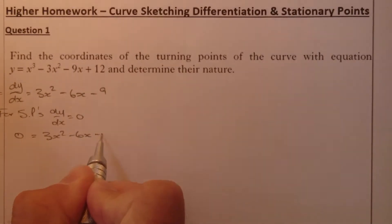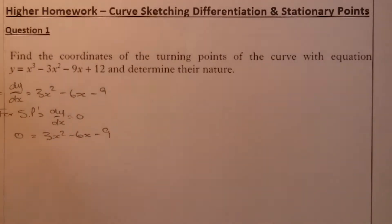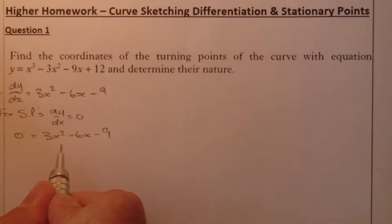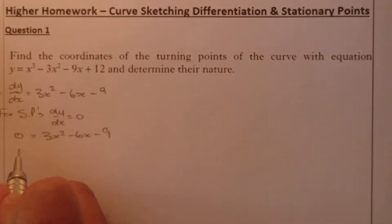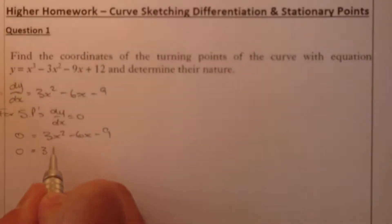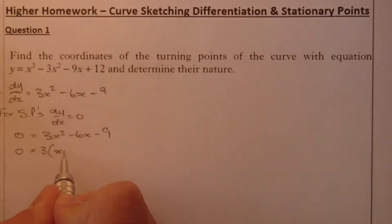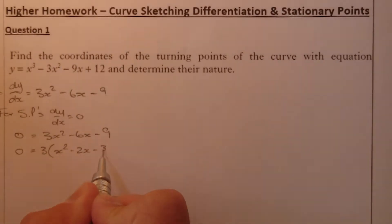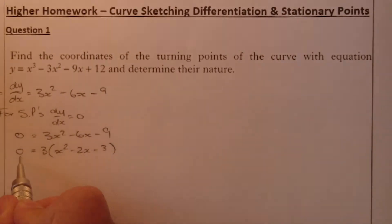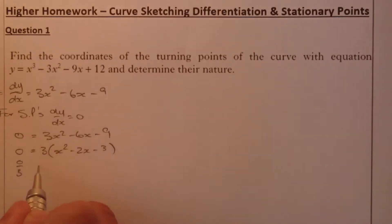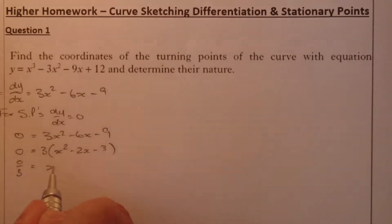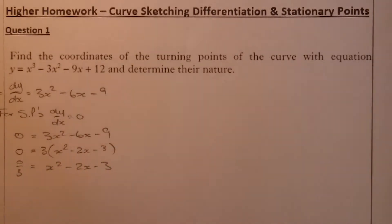So 3x squared minus 6x minus 9 equals zero. I'll factorise this to find my x values. I'll take out a common factor of 3 first, which should make it a bit easier to work with. So that leaves x squared minus 2x minus 3 equals zero — dividing both sides by 3.